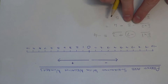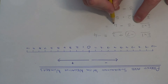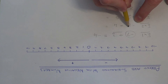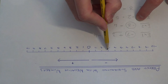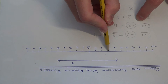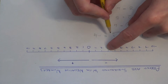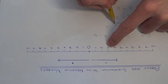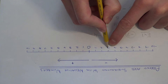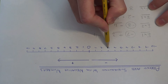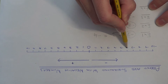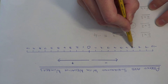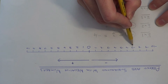Let's do example two. This time we have minus three take away four. So again we need to start on minus three, which is here on the number line. And this time we are taking away four, so this means we need to move four places to the left: one, two, three, four. So we end up on minus seven.